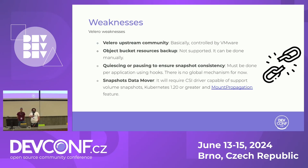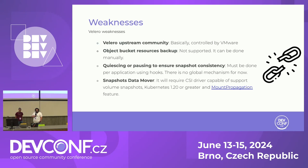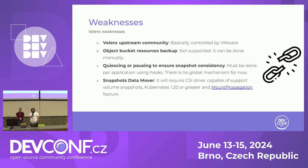For the data mover, you need the CSI driver to have support to do it. You also need to have Kubernetes greater than 1.20, and the mount propagation functionality that allows the volume to be mounted in another container or the same pod, even in a pod that belongs to the same cluster.